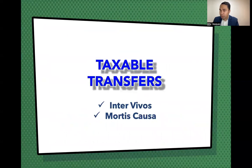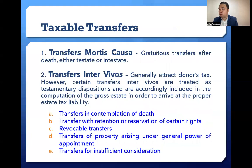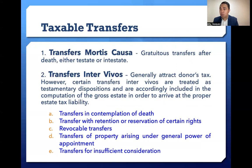We have two types of taxable transfers: inter vivos and mortis causa. For transfer mortis causa, this is a gratuitous transfer after death, either testate or intestate. For transfers inter vivos, this generally attracts donor's tax. However, certain transfers inter vivos are treated as testamentary dispositions and are included in the computation of gross estate in order to arrive at the proper estate tax liability.